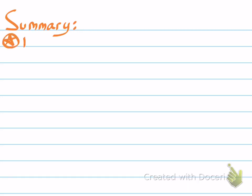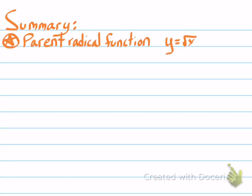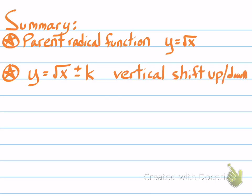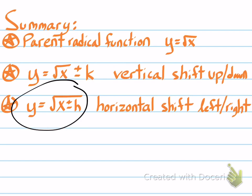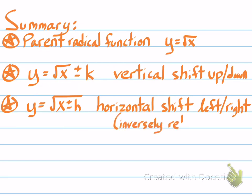Here's a summary: the parent function for all radicals is y equals the square root of x. For vertical shifts, you add or subtract the variable k, which is not underneath the radical sign — k is for vertical. For horizontal shifts, you use the variable h underneath the radical sign. Remember, there is an inverse relationship: adding h moves the graph to the left, and subtracting h moves it to the right.